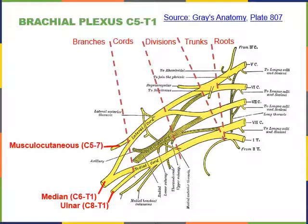The musculocutaneous nerve arises from C5 through C7 as a branch of the lateral cord, traveling down the anterior of the arm between the brachialis and biceps brachii, exciting both muscles which flex the elbow joint. As its name suggests, it also has cutaneous branches carrying sensory information from the anterior region of the arm.